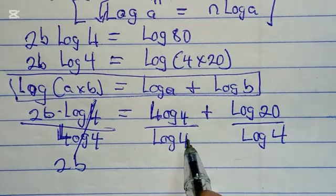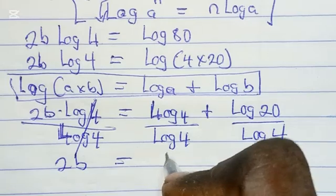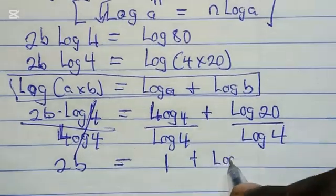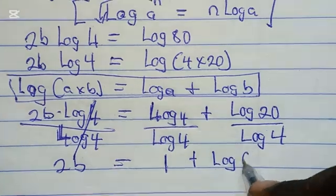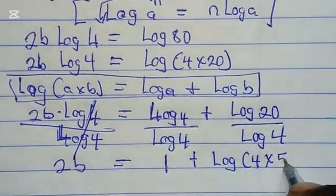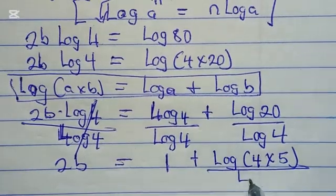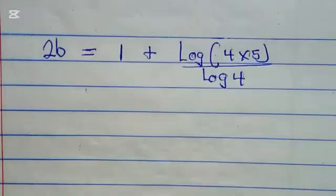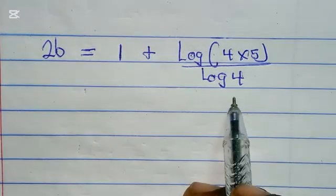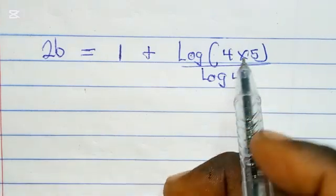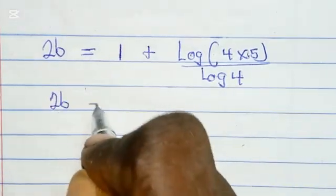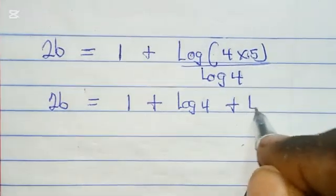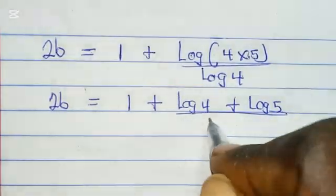For this side, we have 2b equals 1 plus log(4 × 5) divided by log 4. We can express log 20 further as log(4 × 5). Therefore, we have 2b = 1 + (log 4 + log 5)/log 4.